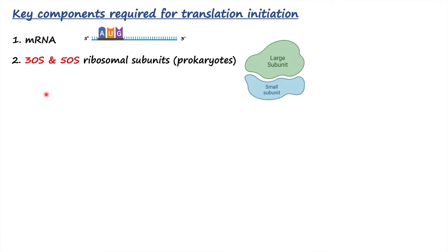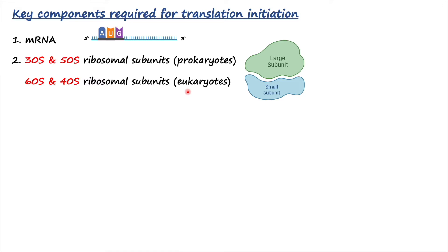Second, we also require ribosomes, which include small and large subunits. In prokaryotes it would be 30S for the small subunit and 50S for the large subunit, and in eukaryotes it is 60S and 40S ribosomal subunits. We are going to talk about this in a little more detail shortly.